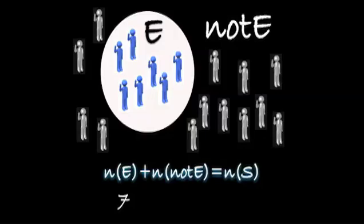By the complement rule, if we take the 7 people that are in E and add them with the 13 people that are not in E, we find that it equals 20 people in this Venn diagram — the total number of people in this picture. The number in E plus the number not in E equals the total.